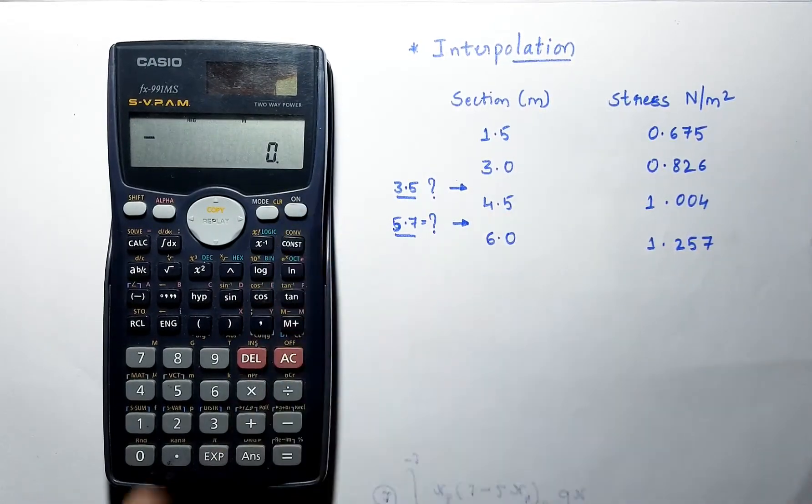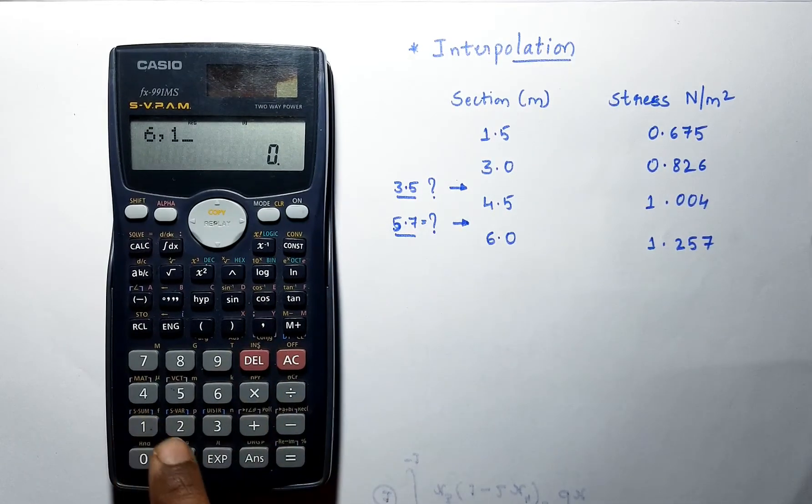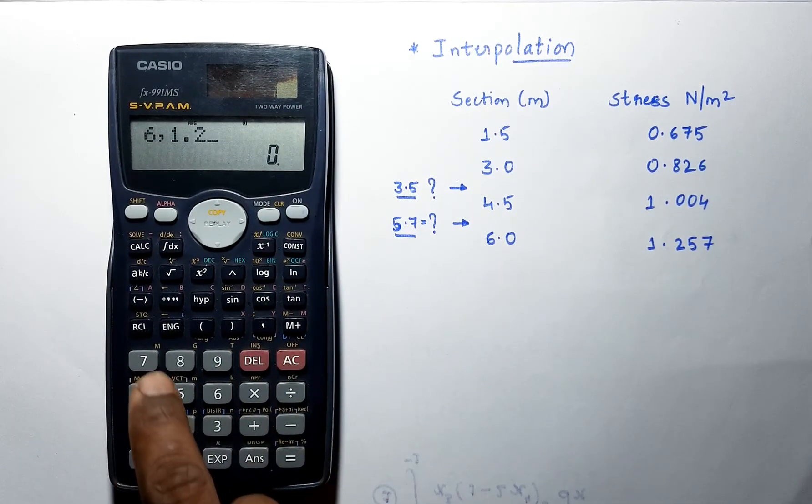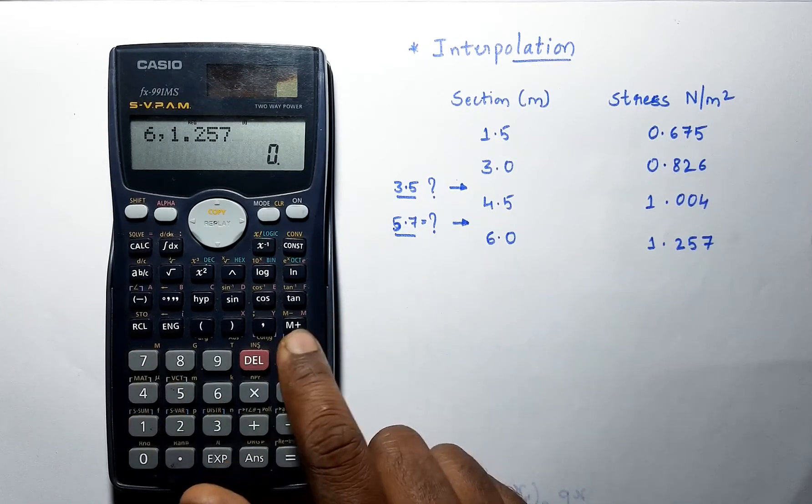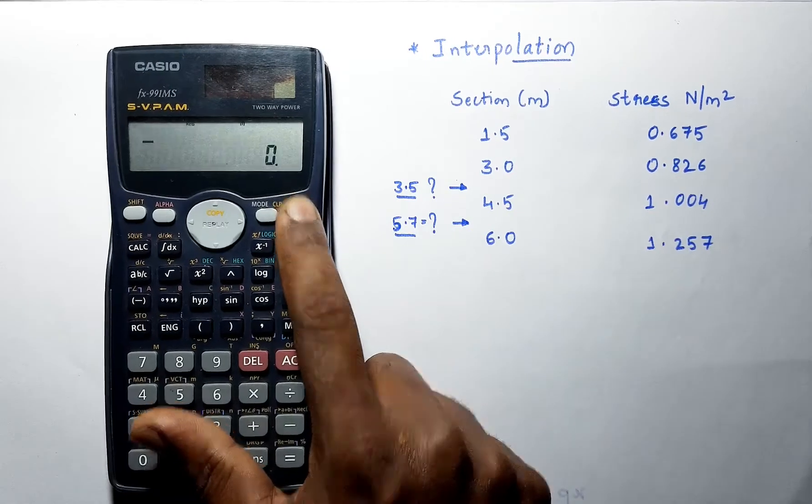Let's store this value. Press 6, 1.257. Again, press M plus. This data is stored now.